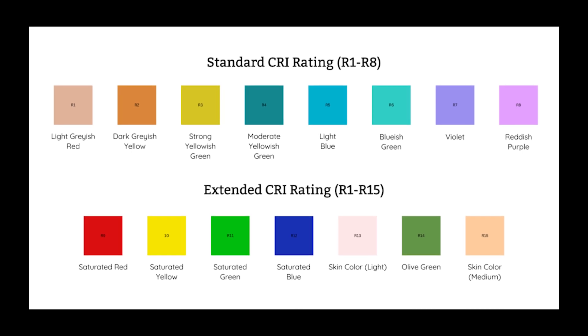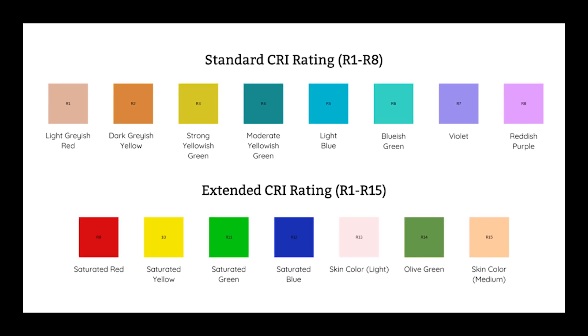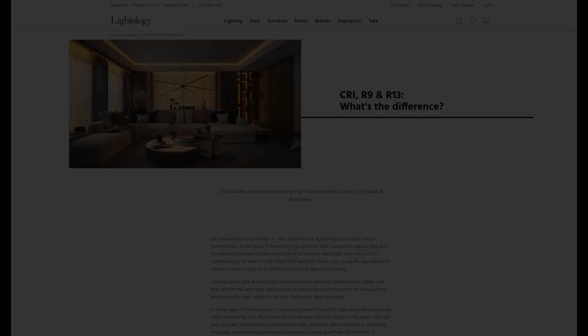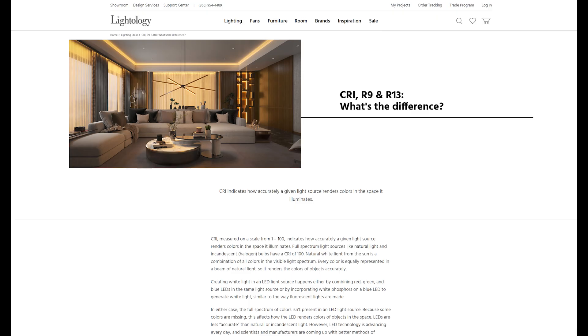For consumers, R9 greater than 50 is generally considered to be good. Cheap LEDs often have R9 near zero. Alternative methods like CQS, TM3015, IES RF RG, GAI, and TLCI are out there too, but CRI is the most common denominator for consumer-grade lighting.